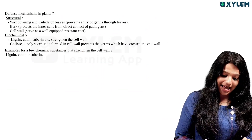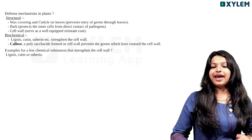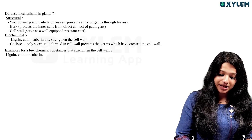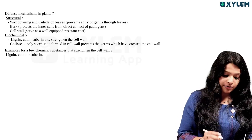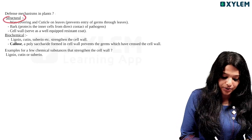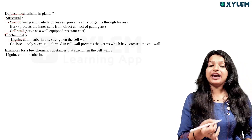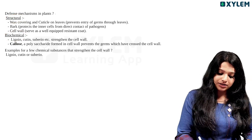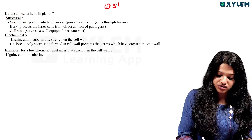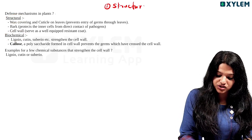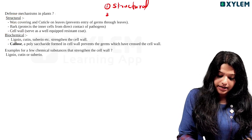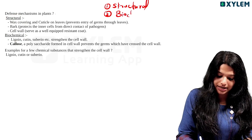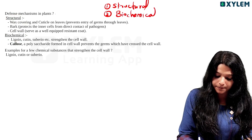Defense mechanisms in plants are classified as structural and biochemical. One category is structural, and the other is biochemical.